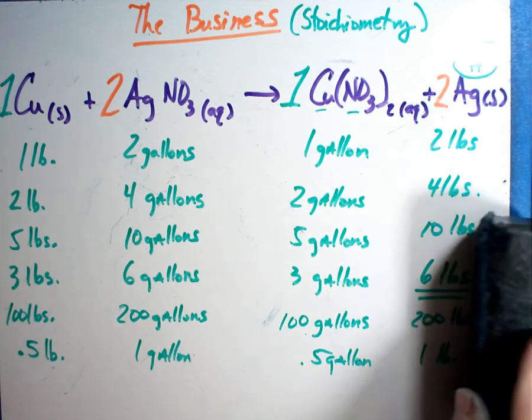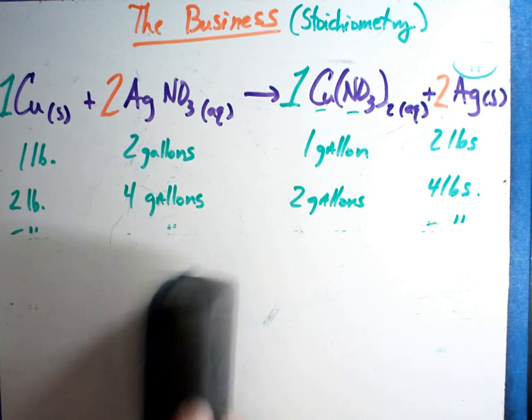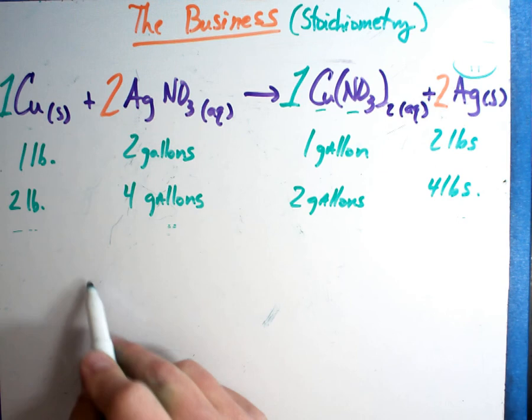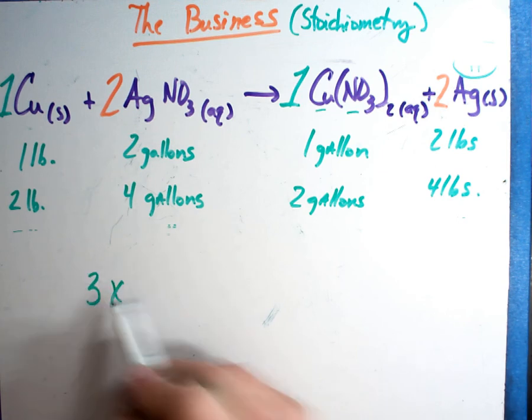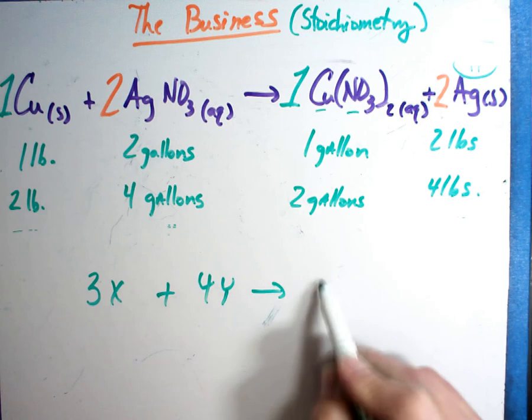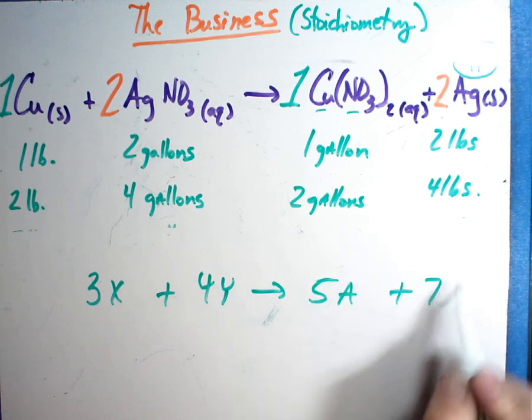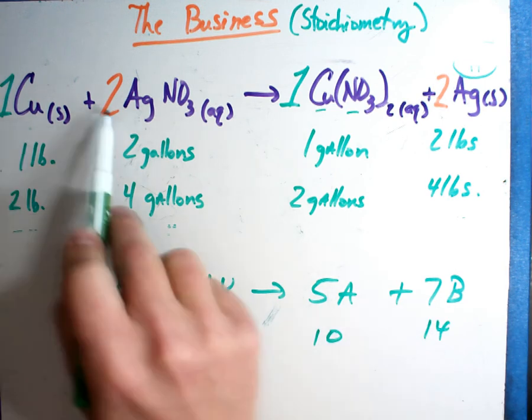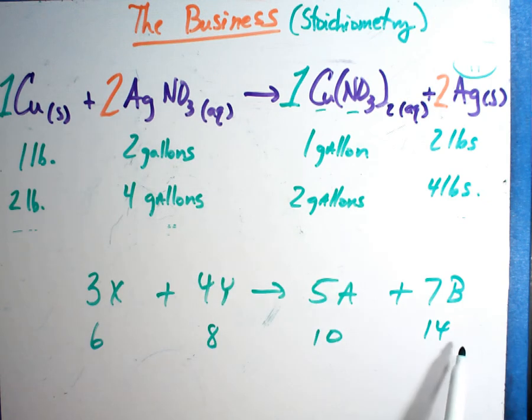Now, let me show you something real quick. If I were you, on your page, I'd skip down about six or seven lines. But let's say we had this generic reaction, 3x plus 4y makes 5a plus 7b. Being real simple here, if I had six of this, not worried about units, 3 goes to 6, that's doubling. I know this is 8, this is 10, this is 14. It's all ratios. It's not always 1, 2, 1, 2, but the same math works every time.